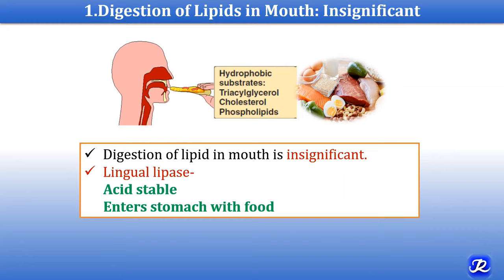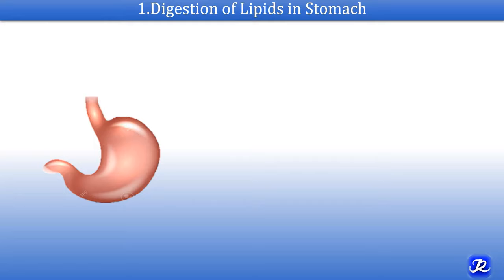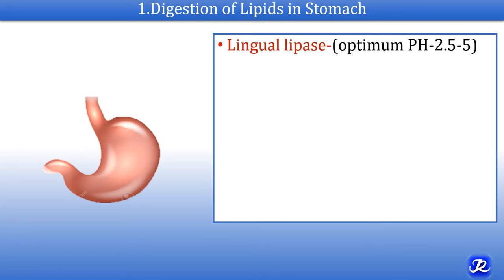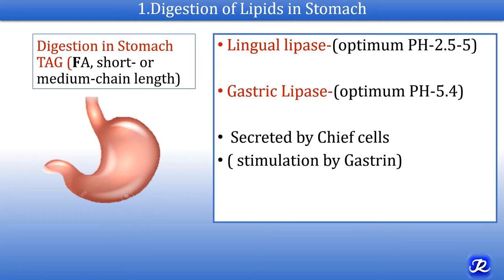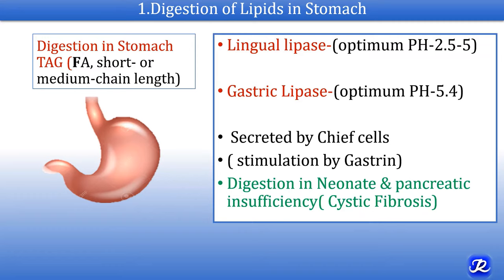Digestion of lipids begins in the stomach. It is carried out by two important enzymes: lingual lipase and gastric lipase. Gastric lipase is secreted by chief cells of the gastric mucosa on stimulation by gastrin. Lingual and gastric lipase hydrolyze triacylglycerol containing short and medium chain fatty acids, which are present in milk. This digestion in the stomach is important in neonates and in patients with pancreatic insufficiency, for example cystic fibrosis.